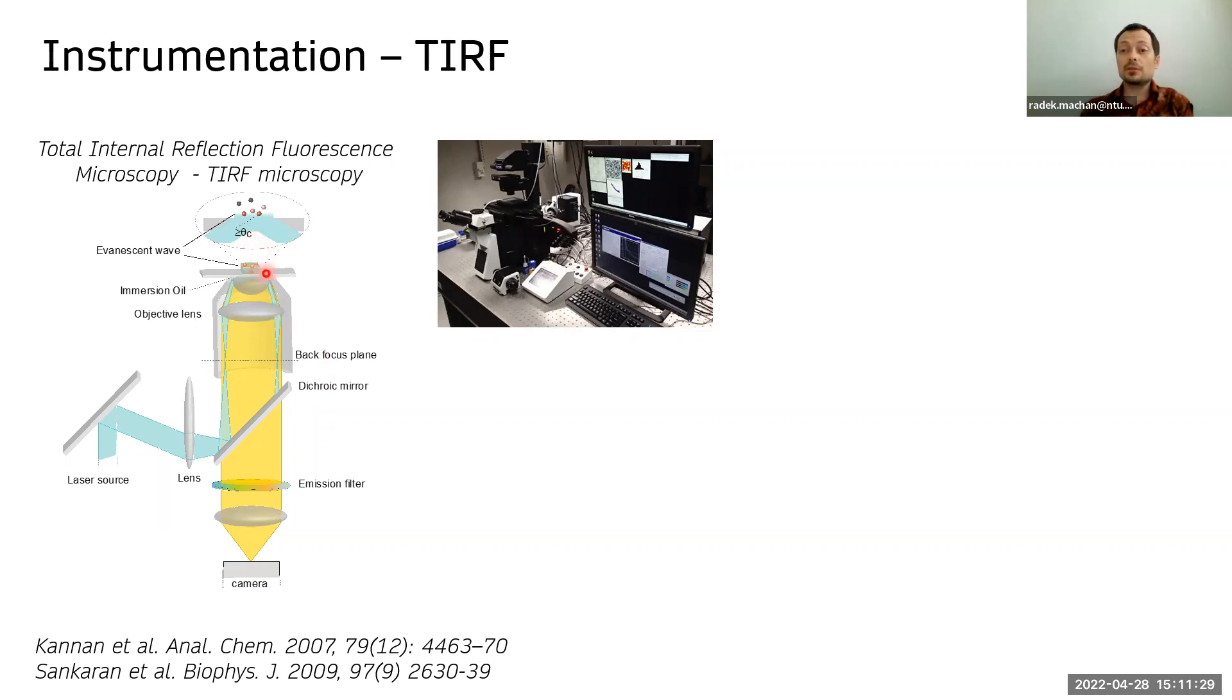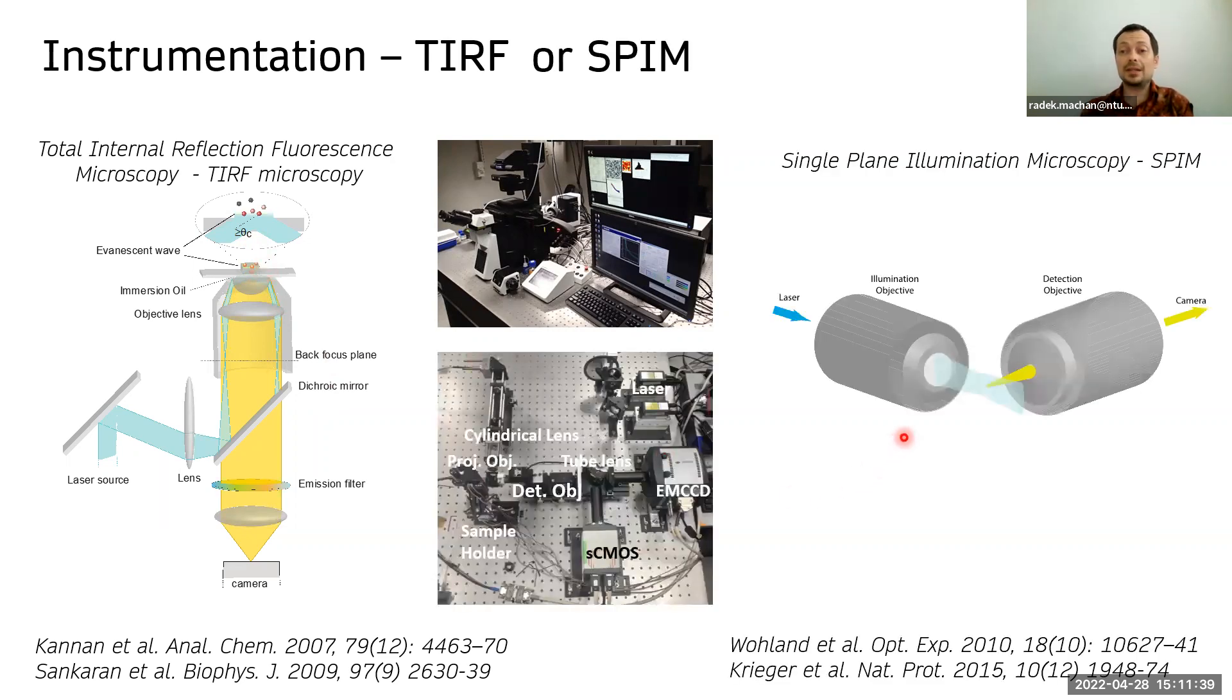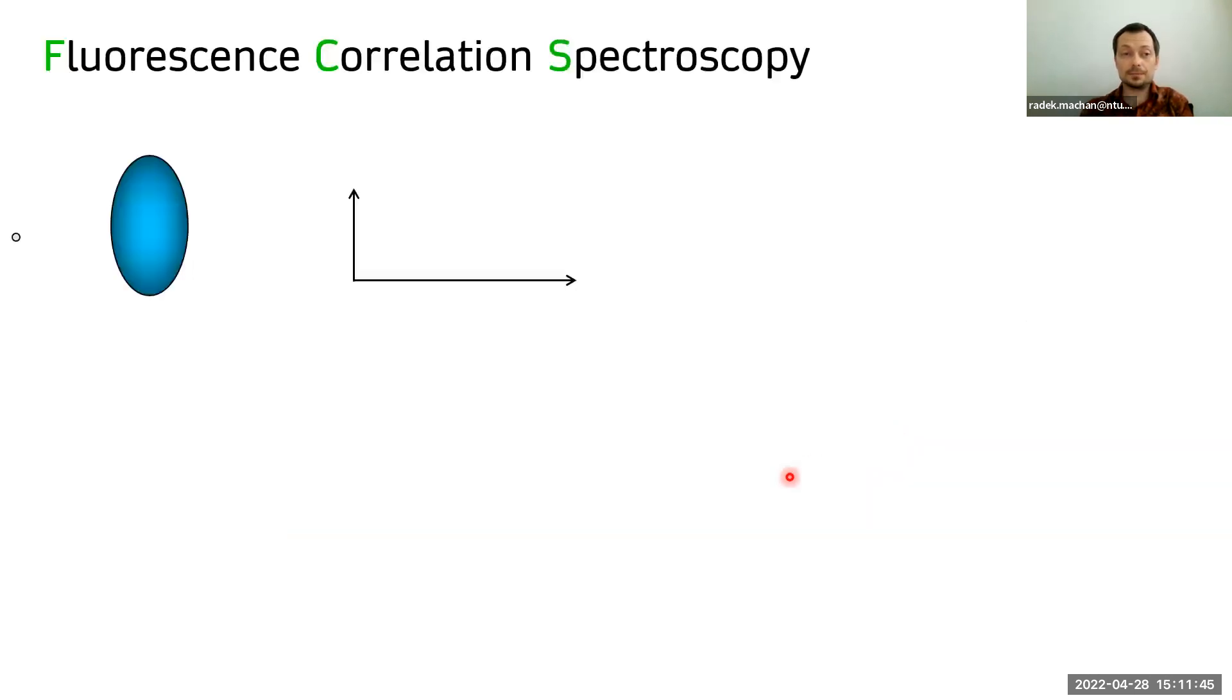If we are using TIRF microscope, which is the typical choice when we are working with cell membranes or with lipid bilayers, or it can be the thickness of light sheet of a light sheet microscope, which will be applicable for any other type of sample.